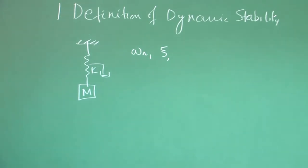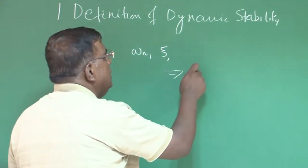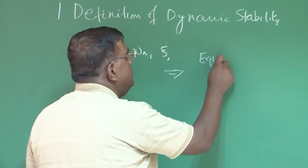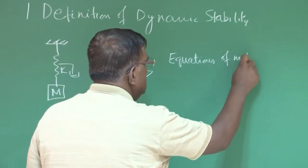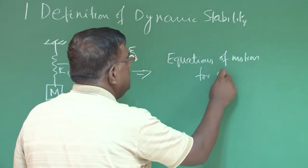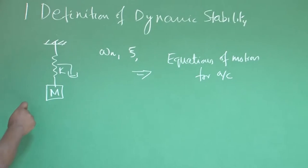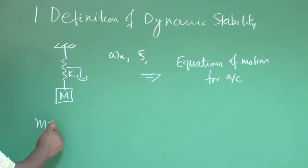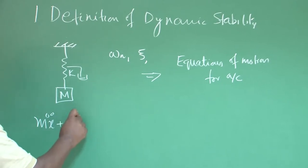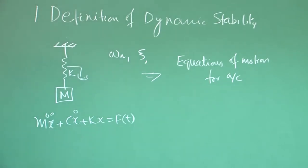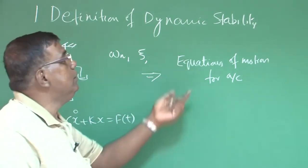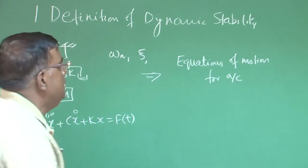After doing this, we made a step towards writing equations of motion for airplane or aircraft, because here we know the equation was m x double dot plus c x dot plus k x equal to f of t, which describes one dimensional motion of this mass once a disturbance is given.